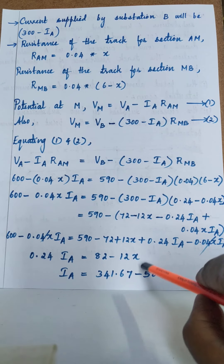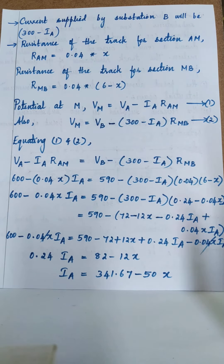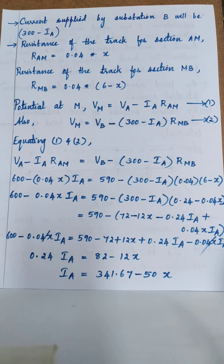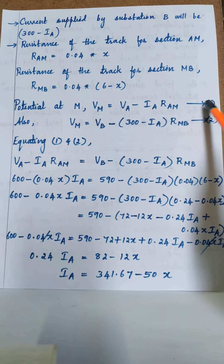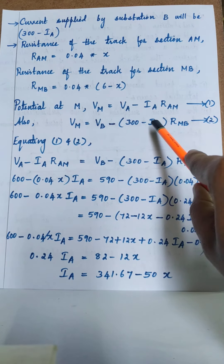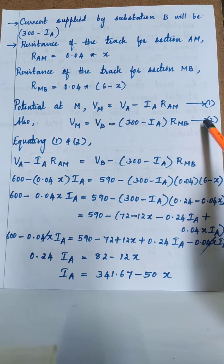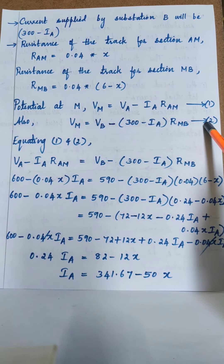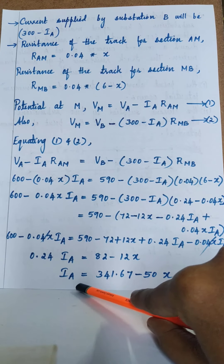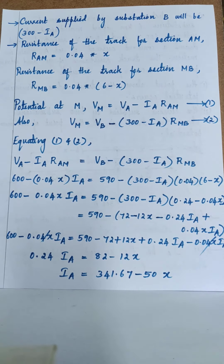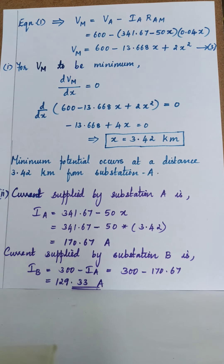To summarize what we have done: we wrote the resistance of track sections AM and MB, then expressed Vm with respect to substation A as equation one and Vm with respect to substation B as equation two. Equating both equations and substituting known values, we obtained the expression for Ia as 341.67 minus 50x.